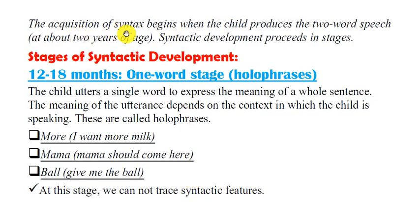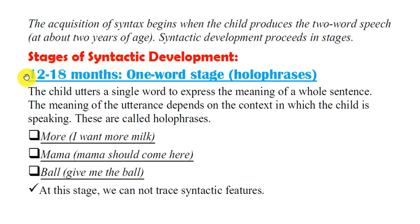The acquisition of syntax begins when the child produces two-word speech at about two years of age, and syntactic development proceeds in stages. The very first stage in syntactic development is the one-word stage, or the holophrastic stage. This stage begins when children are about 12 to 18 months old.